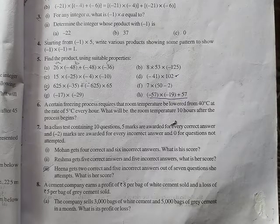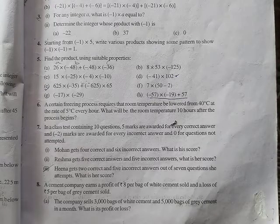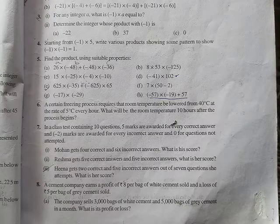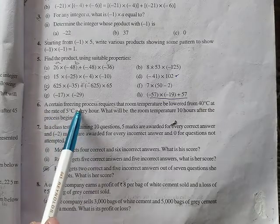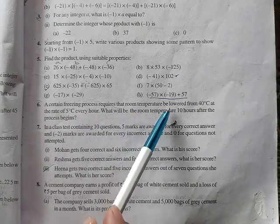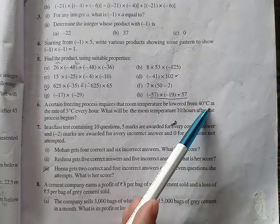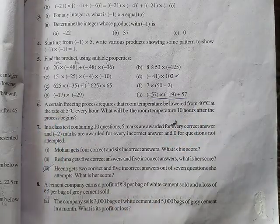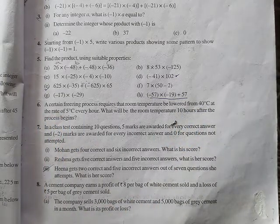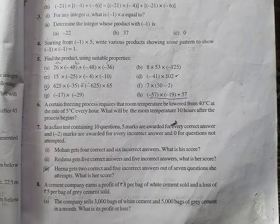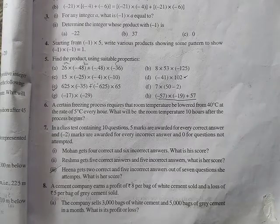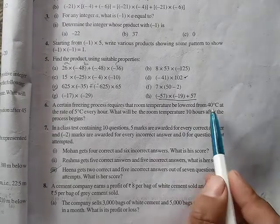In class 7 students, we will start with question number 6. Question number 6 is a word problem. A certain freezing process requires that room temperature be lowered from 40 degrees Celsius at the rate of 5 degrees Celsius every hour. What will be the room temperature 10 hours after the process begins?